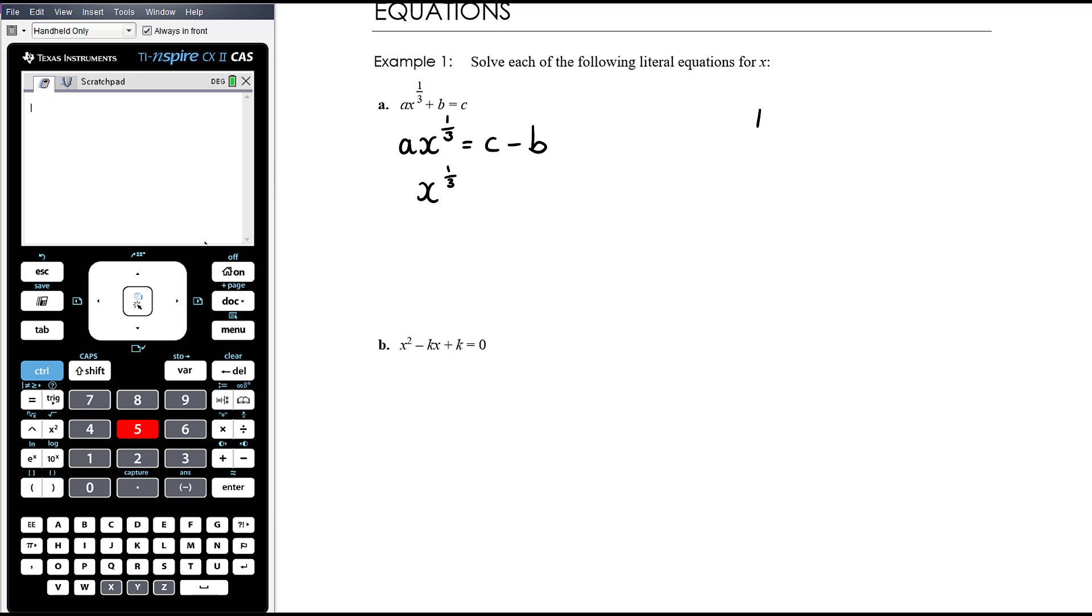Okay, if you think about how the left hand side of this was built up. You've started with x, you've first of all raised it to a power of a third, then you've multiplied it by a, then you've added on b. So to get back to x, you've got to undo those things in the reverse order. You've got to take away b, then you've got to divide by a, then you've got to do the opposite of a power of a third, which is actually giving me a power of 3. Okay, and then we should be back to x.